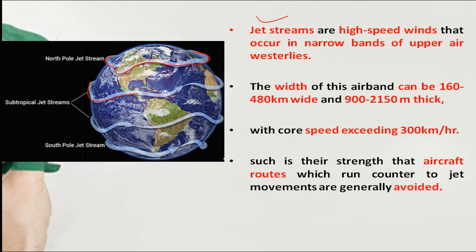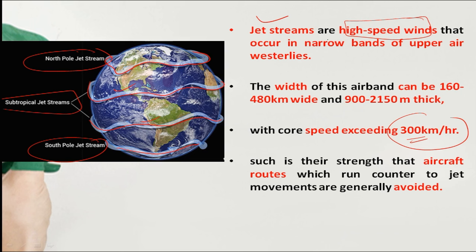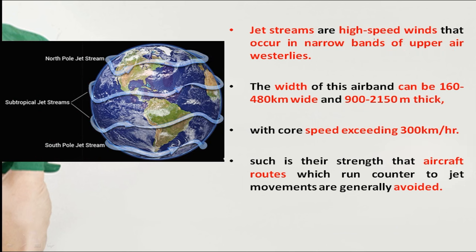Jet streams are high-speed winds with speeds exceeding 300 km per hour. They occur in narrow bands of upper air westerlies. Their main characteristics are that they occur at high altitude, not at the surface, in very narrow bands.